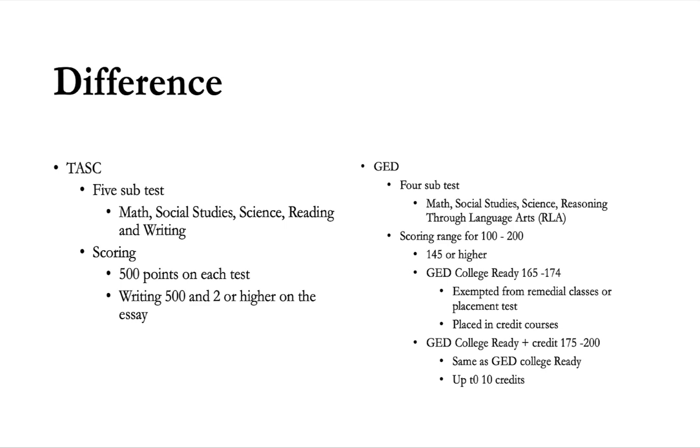The GED also has two other standards with different score ranges. If your scores are between 165 to 174, they call that GED College Ready. Depending on the college or program, you may be exempted from remedial classes or placement tests and could be placed in credit classes. Again, this depends on the college or program.